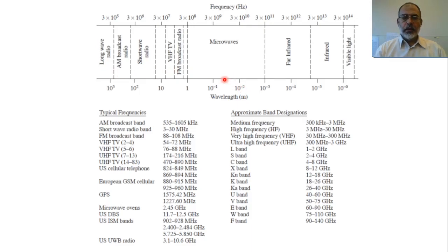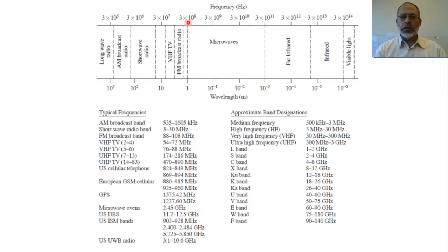Looking at the frequency spectrum: around 300 MHz, the wavelength corresponds to 1 meter. Starting from 300 MHz to 3000 MHz, we are talking about the microwave range. Before microwave, we are talking about RF — specifically VHF and UHF, very high frequency and ultra high frequency, just below the microwave range. Before very high frequency, there is short-wave radio, from around 10 MHz to 30 MHz.